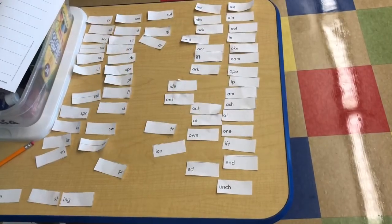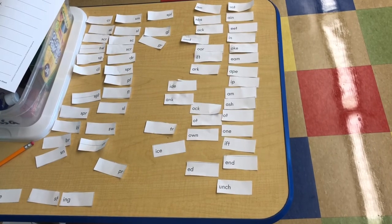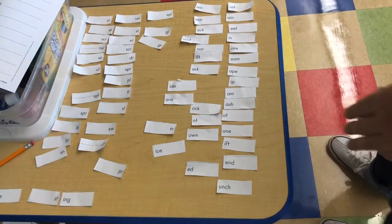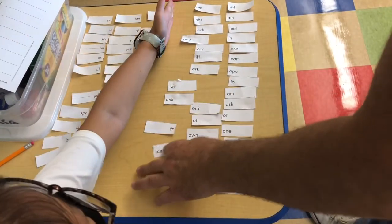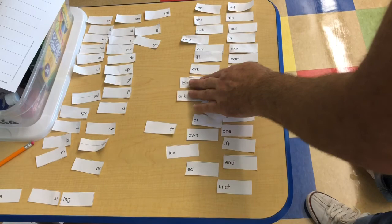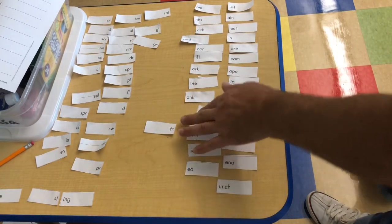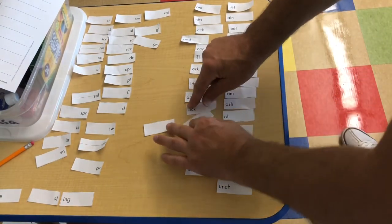After you've cut out your words and they're nice and neat, you should have all the beginning sounds on one side and facing up, like what we have here. And then all of the ending sides or endings of the words should be on the other side.